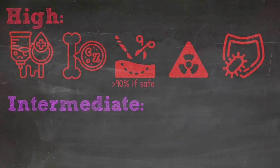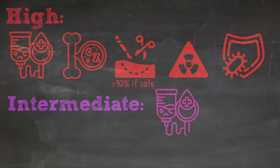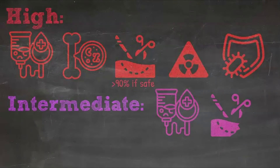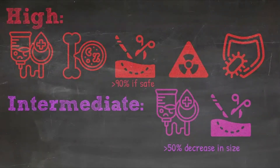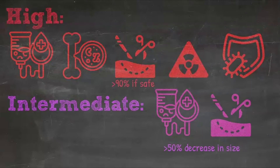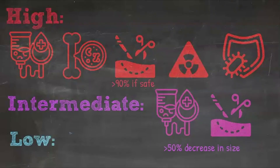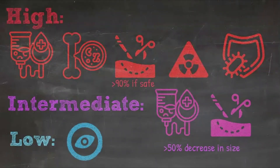Intermediate risk tumors get varying cycles of chemotherapy based on the biologic risk factors that they have. In terms of surgery, the goal at the time of debulking or resecting the primary tumor is to achieve at least a 50% response from the initial volume of the primary tumor. The combination of neoadjuvant chemotherapy and surgical resection should achieve a greater than 50% reduction in primary tumor size. The low risk group, depending on the actual age of the patient and how it's diagnosed, could potentially be followed simply with observation.